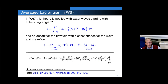Now let's go back to W67. Luke's Lagrangian variational principle is now legendary in the theory of water waves. But this paper of Whitham was the first paper ever to use it. Not only that, they both appeared in the same issue of JFM. You'll notice the page numbers here — Luke's article was only three pages, and Whitham's was the very next article in that same issue.